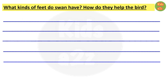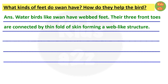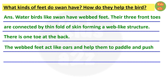Next question: what kind of feet does a swan have and how do they help the bird? Answer: water birds like swans have webbed feet. Their three front toes are connected by a thin fold of skin forming a web-like structure. There is one toe at the back. The webbed feet act like oars and help them to paddle and push water back while swimming.